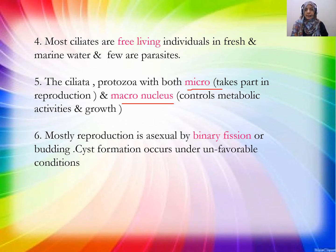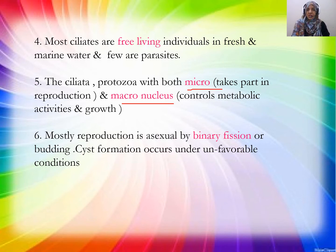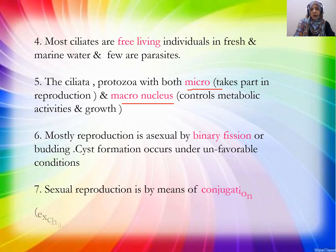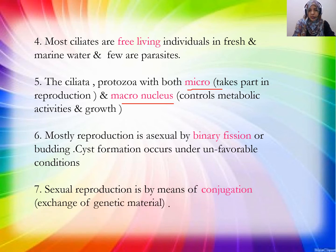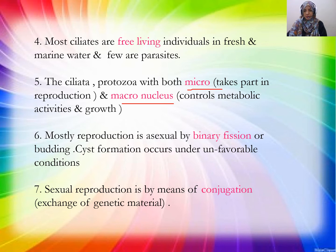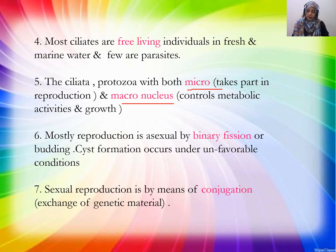They have two nuclei. Reproduction is mostly asexual by binary fission or budding. Budding means a fully developed new organism develops from the parent cell and leads an independent life. When there are unfavorable conditions, cyst formation occurs. Binary fission is simple cell division. Sexual reproduction occurs through conjugation, where genetic material is exchanged between organisms.